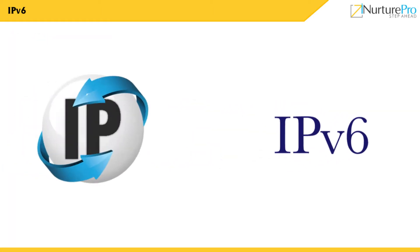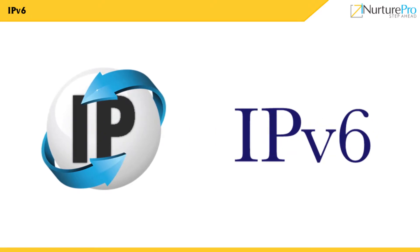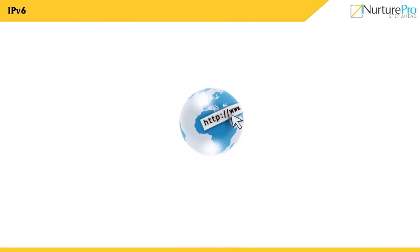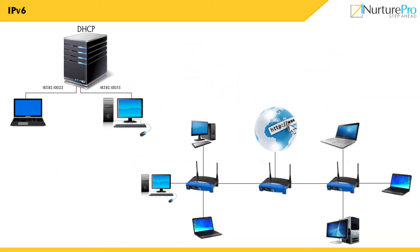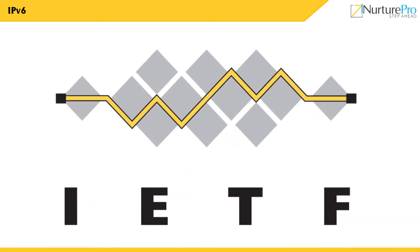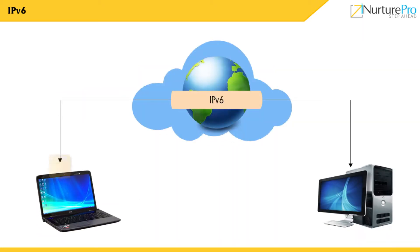Internet Protocol version 6, or IPv6, is the modern version of Internet Protocol. IPv6 is referred to as a communication protocol which provides computer identification and location facility in a network. It also controls the traffic across the Internet. IPv6 was developed by the Internet Engineering Task Force, or IETF, to overcome problems with the existing IPv4. Network devices can use IPv6 as source and destination addresses to send packets over a network.